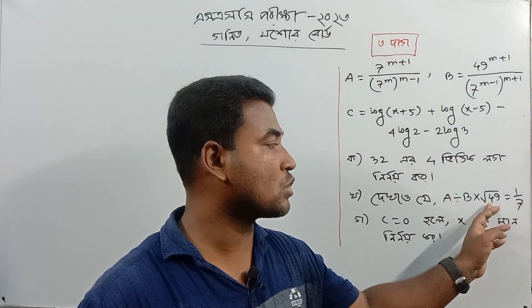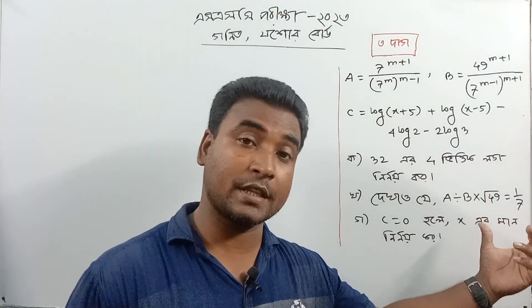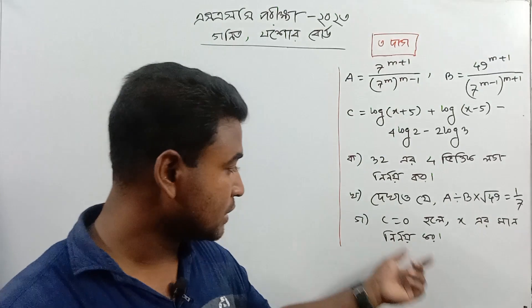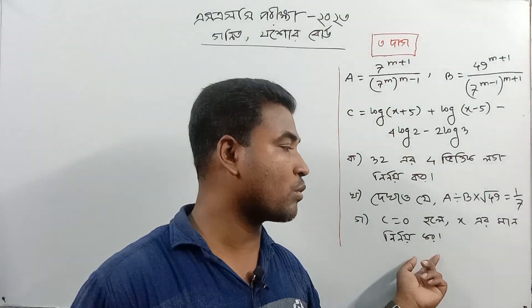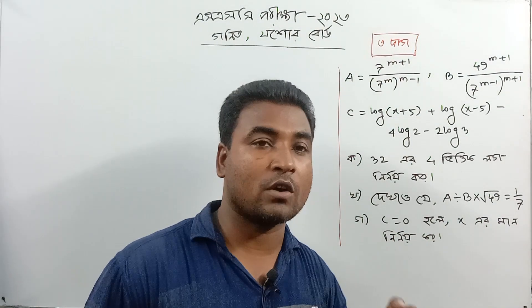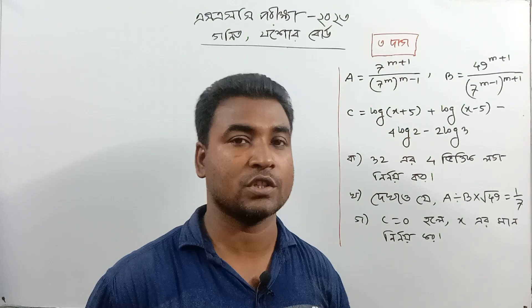If a is b into root about 9 equals 1 by 7, we will work through that. If c equals 0 and x is equal to 1, we will proceed.